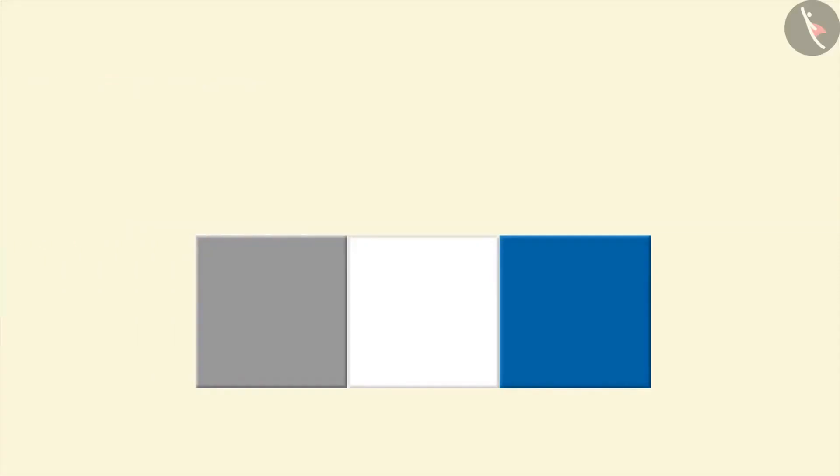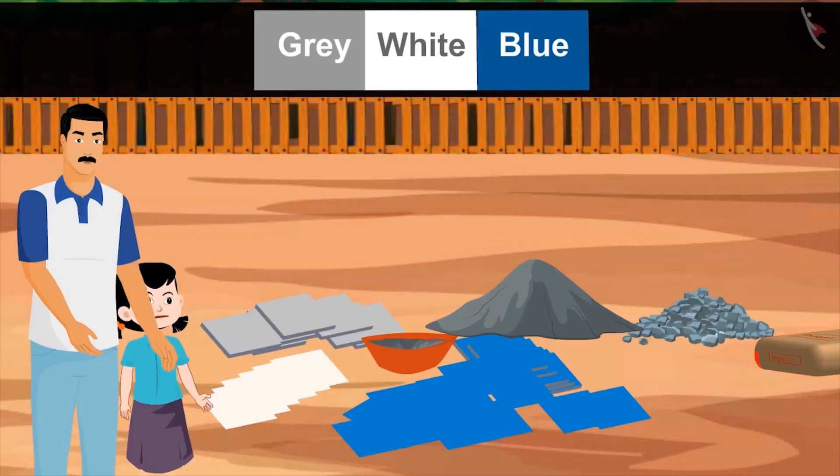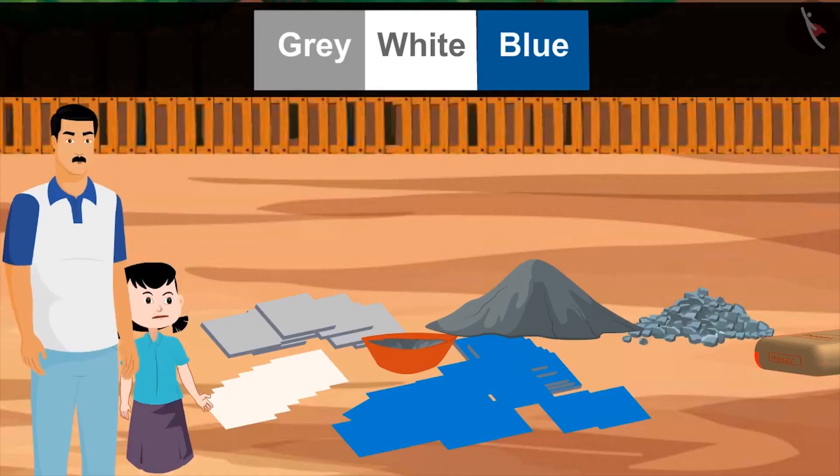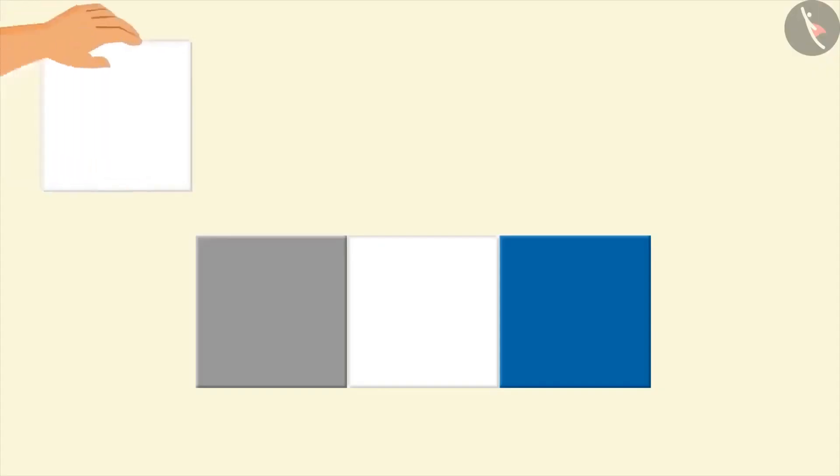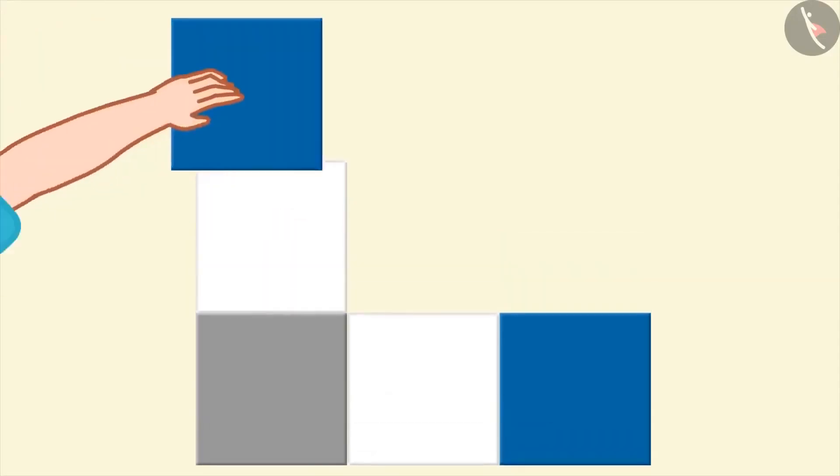No, not like this. The order of placing tiles over here is grey, then white, then blue. And then, after blue, again grey. Using this pattern, the whole floor will be tiled. So here, near the grey tile, we will place the white ones. Now, is it okay?